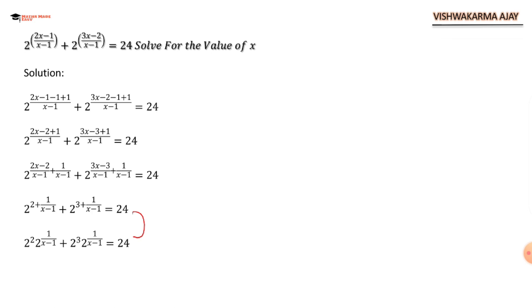There is a law of indices that says a raised to (m plus n) can be written as a raised to m times a raised to n. So this 2 to the power (2 plus 1 upon x minus 1) can be written as 2 to the power 2 times 2 to the power (1 upon x minus 1). Now 2 to the power 2 is 4. 4 times 2 to the power (1 upon x minus 1).